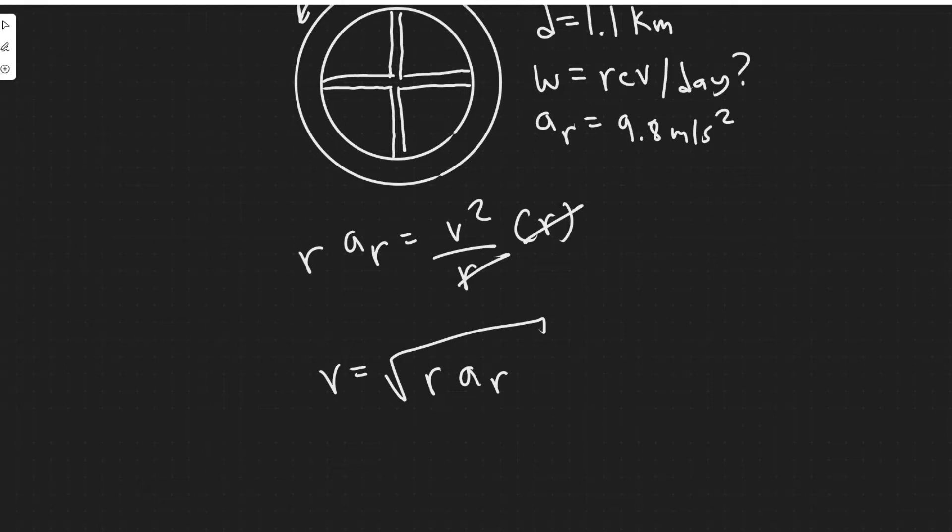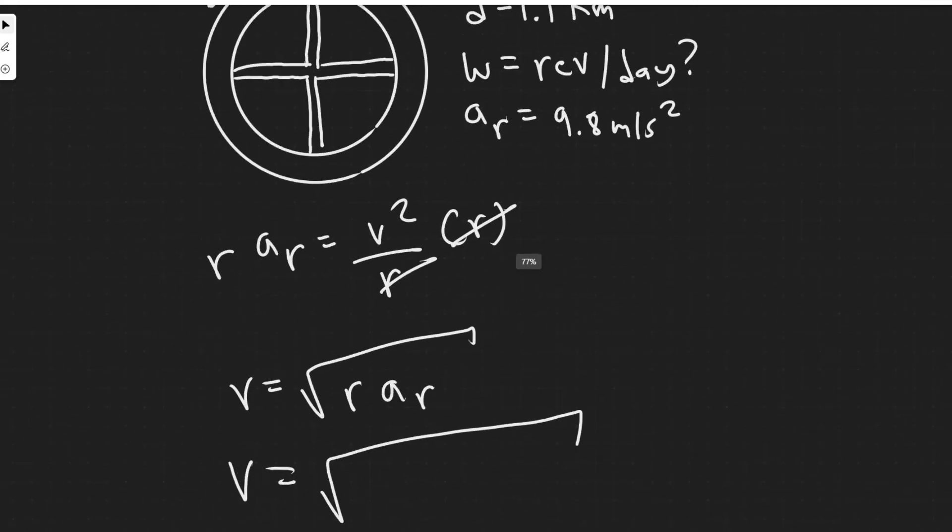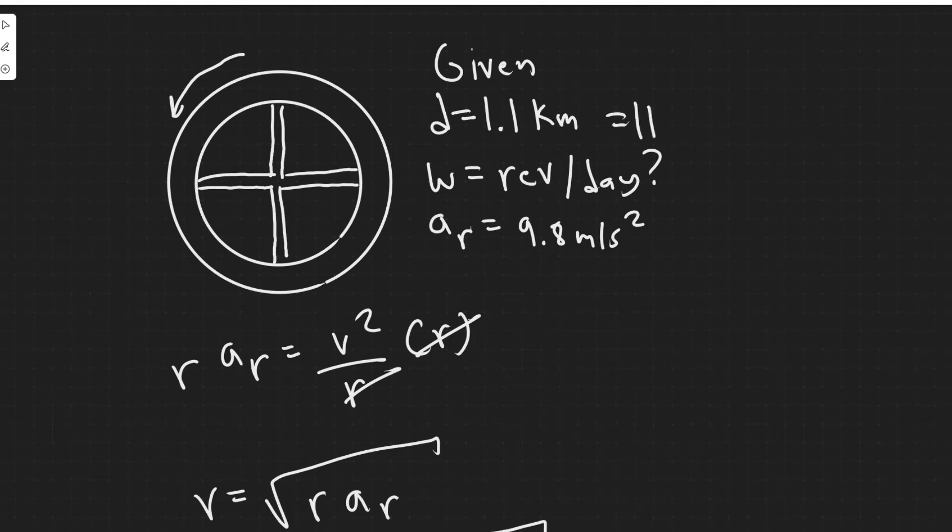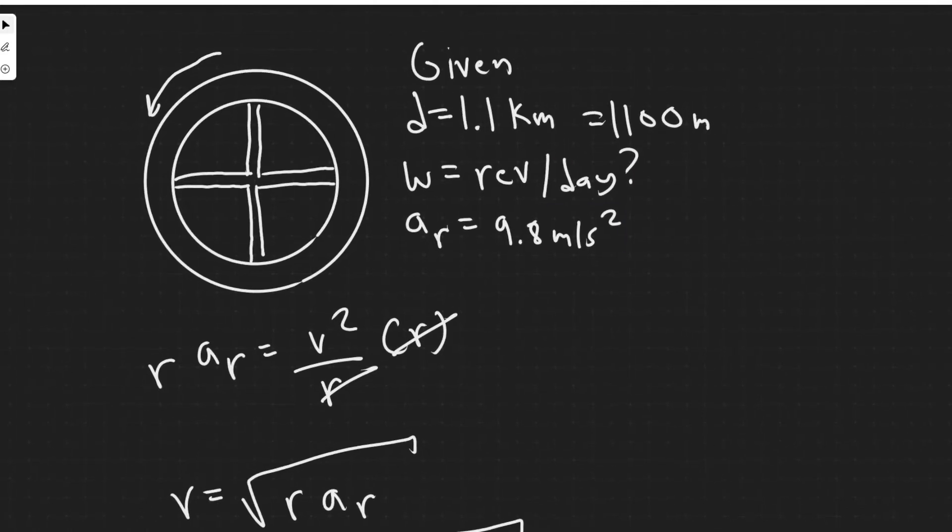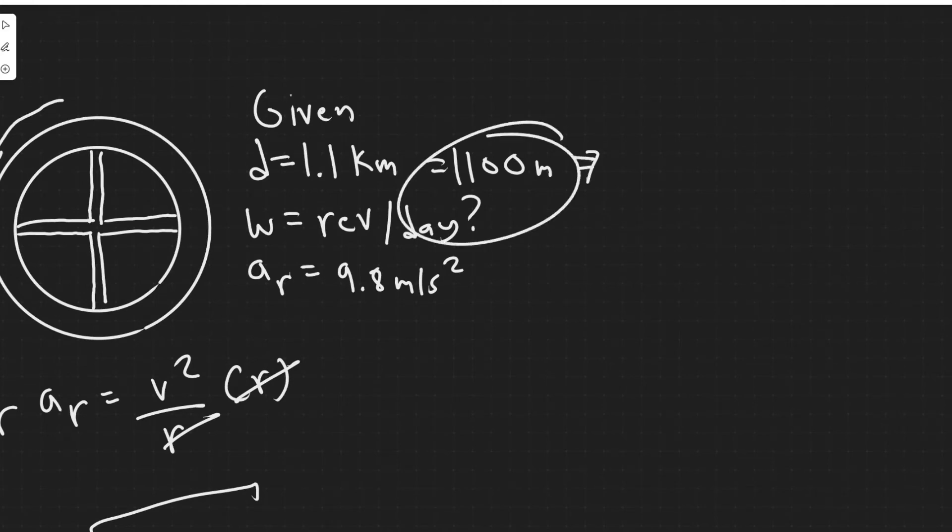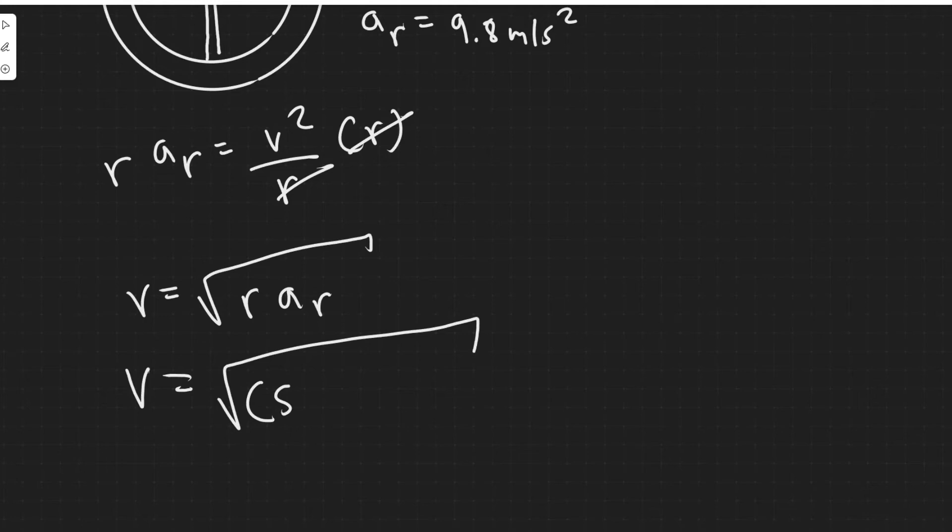And so now what we need to do is just plug in. So the velocity equals the square root of the radius. And so the radius is going to be, notice it's 1.1 kilometers. So 1.1 kilometers is equal to 1,100 meters. You should just know that 1 kilometer is 1,000 meters. So this is just 1,100 meters. And then we're dealing with radius, not diameter. So you need to know the radius is essentially half of the diameter. So 1,100 divided by 2 to get the radius gives you 550 meters.